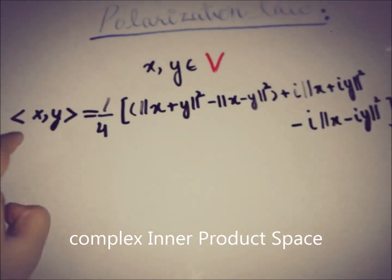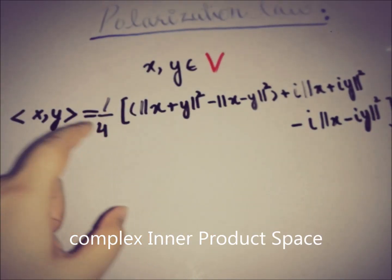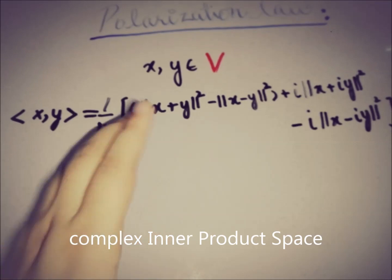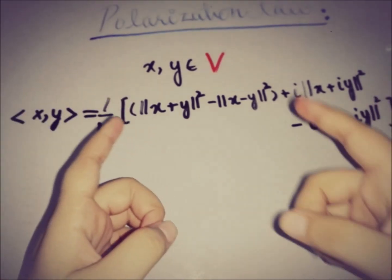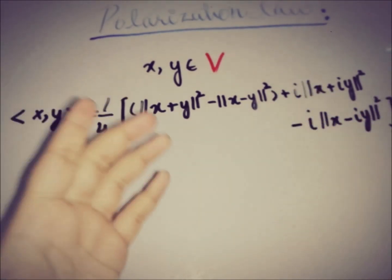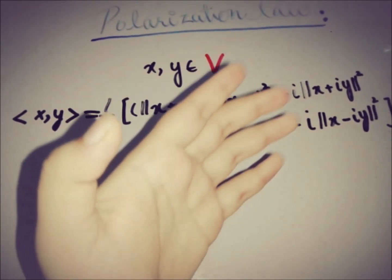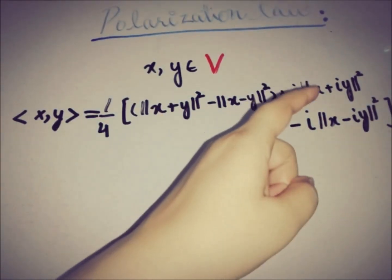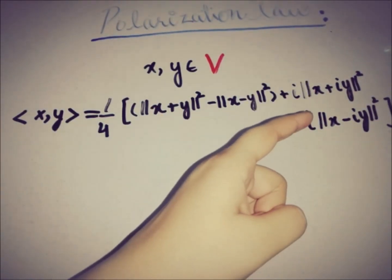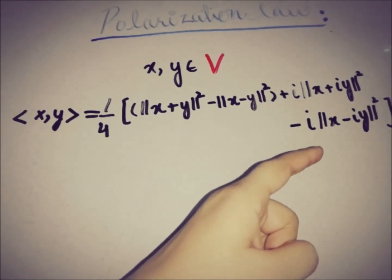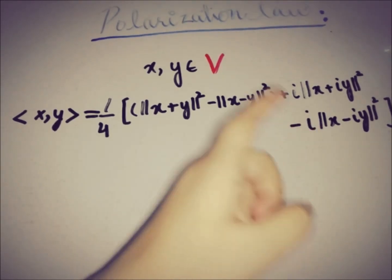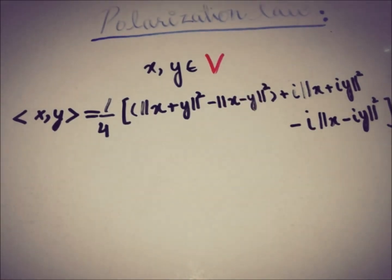So we have x and y from the inner product space, and we can write the inner product equal to one-fourth times this whole expression. The real part contains the norm square of x plus y minus the norm square of x minus y, and the imaginary part contains the norm square of x plus iota y minus the norm square of x minus iota y.